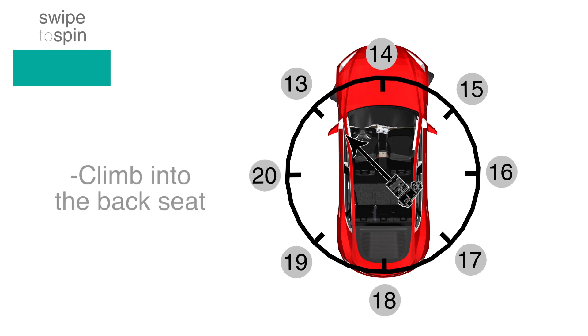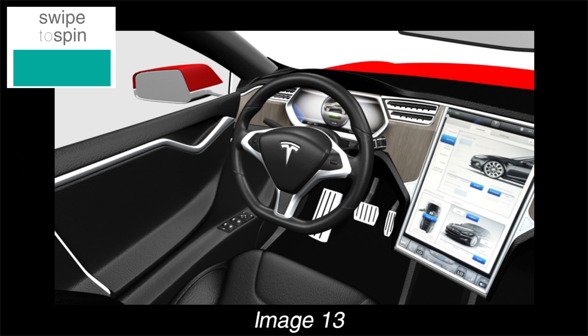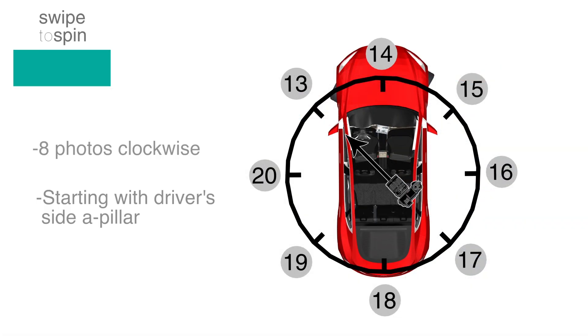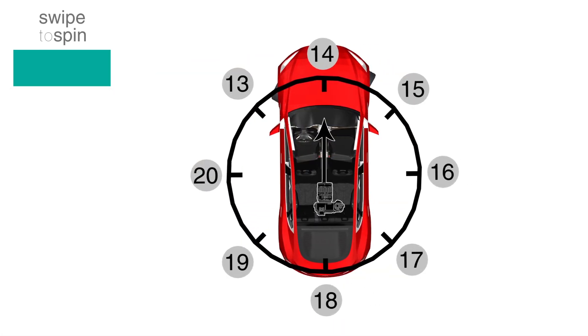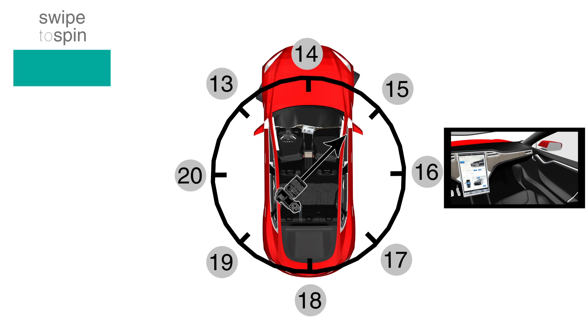Next, climb inside the car's back seat. Take 8 interior photos in a clockwise direction. First, take one photo of the driver's side A pillar, then the center of the dash, then the passenger's side A pillar, and the passenger's side rear seat door.